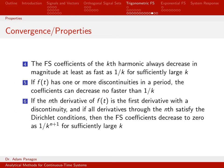These last few items have to do with convergence properties of the coefficients and how they behave for large values of n or k. The first of these says that the coefficients of the k-th harmonic always decrease in magnitude at least as fast as 1/k for sufficiently large k. This puts a lower bound on the rate of decay. In some examples we've seen n-squared in the denominator, meaning they decay much faster, but 1/k is the slowest they would ever decay.